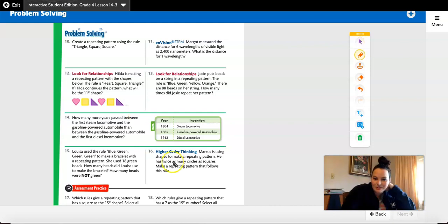Okay. Were you able to make a pattern that had twice as many circles as squares? Your pattern should have in it one square to two circles. Because if I have twice as many circles as squares, I need to be able to say 1 times 2 is 2.